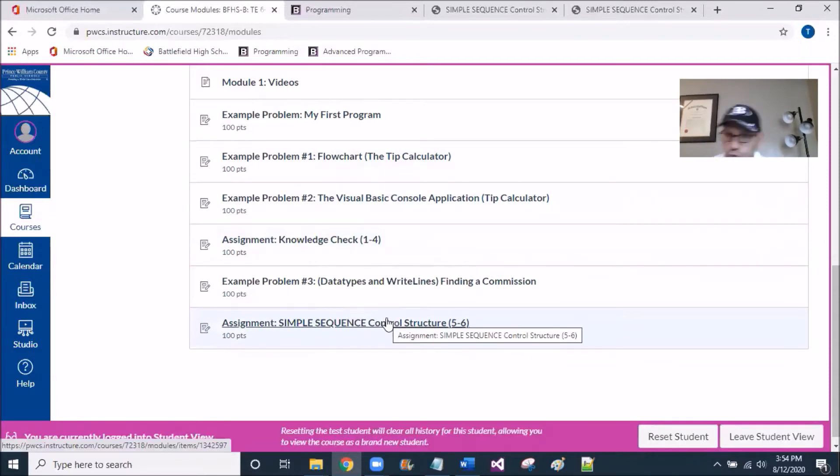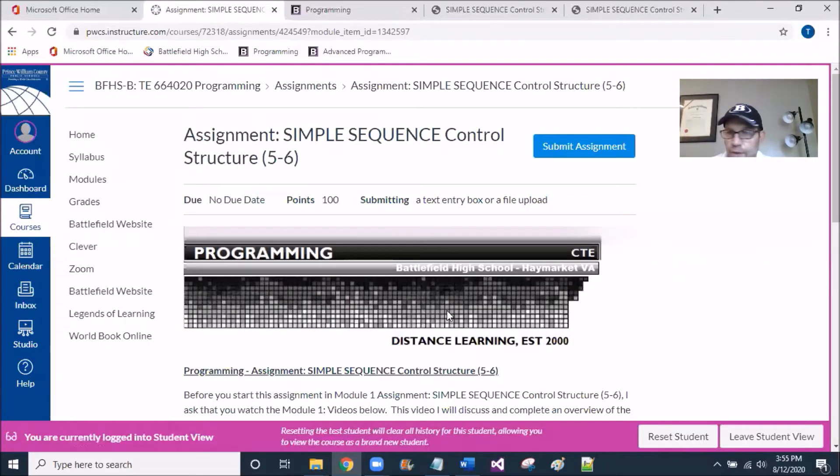So now we're ready to write two programs that will have a flowchart, will have code, and then you'll have to turn in the console application. So in the assignment, simple sequence control problems five and six, the reason it's called five and six is because I'm using one through four up above as I increase these numbers. So I'm expanding and going into this problem.